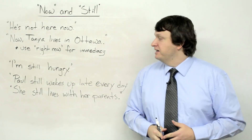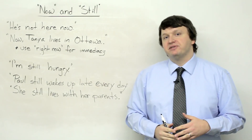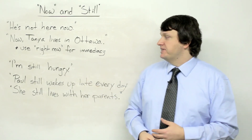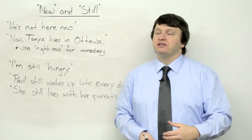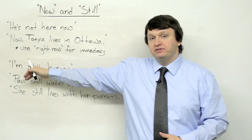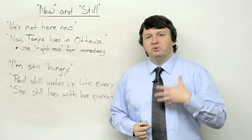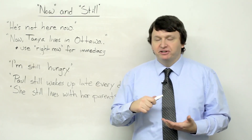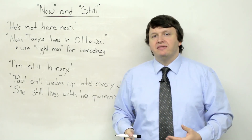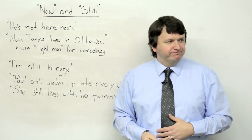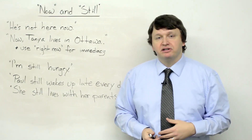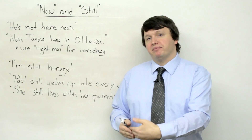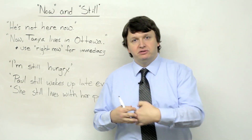Here we have 'still.' We can use 'still' to talk about something that began in the past and has continued until the present. The first sentence is 'I'm still hungry.' Before an adjective, you can use 'still.' So imagine you're having lunch and you have lasagna. You finish your lasagna, and then after five minutes, you're hungry again — you are still hungry. You were hungry before lunch, and you are hungry now. So we can use 'still' to talk about something that started in the past but has continued until the present.